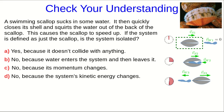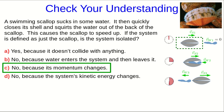Here's the question that I ended the previous part of the video lecture with, and let's have a look at the answer. The definition of isolated is that there are no external interactions, and whenever there are no external interactions, the system's momentum doesn't change. But this scallop speeds up, so its velocity changes, and therefore its momentum changes, and so this system is not isolated.